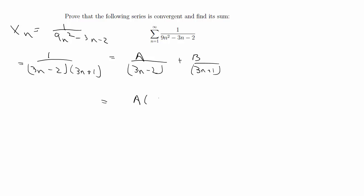When you simplify that, it's going to give you (3n plus 1) times A plus B times (3n minus 2) over (3n minus 2) times (3n plus 1).